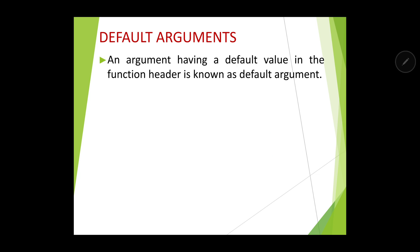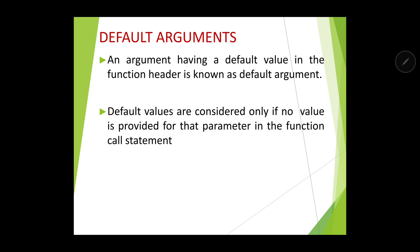Let us go to the next one, which is default arguments. What is a default argument? An argument having a default value in the function header is known as a default argument. Default value means a fixed value. If an argument has a fixed value in the function header, then it is known as a default argument. Default values are considered if no value is provided for that parameter in the function call statement — so default values will only be used if we do not pass any value for that parameter in the function call statement.